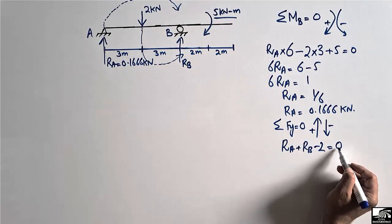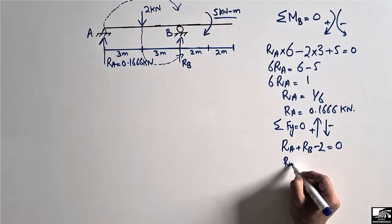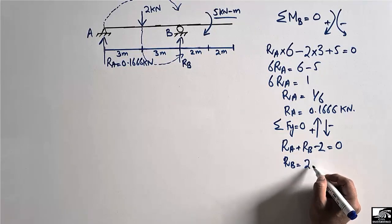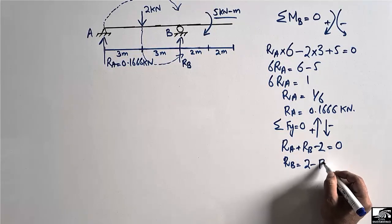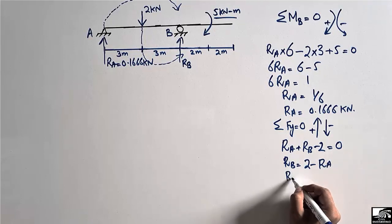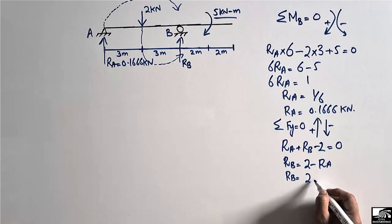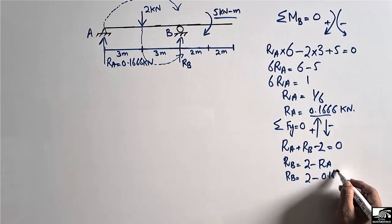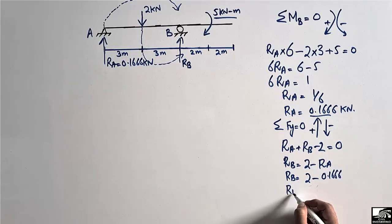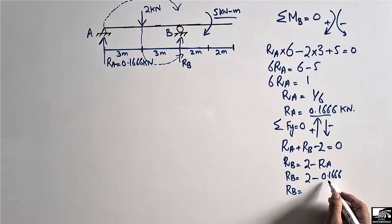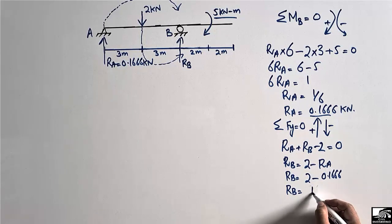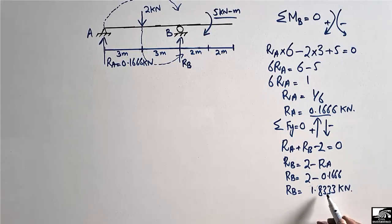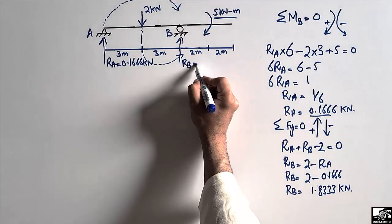Setting the summation of all vertical forces equal to zero: RA plus RB minus 2 equals zero. So RB equals 2 minus RA, which is 2 minus 0.1666. RB comes out to be 1.8333 kN.